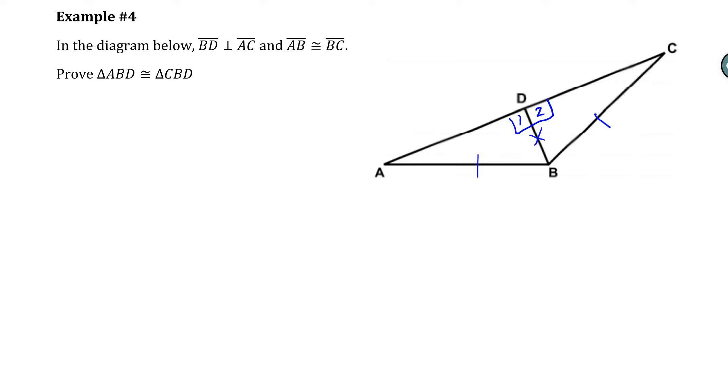So let's see what this proof actually winds up looking like. So the first thing that we have to do here is we have to say that BD is perpendicular to AC. That's given. And then we have to say that angle 1 and angle 2 are right. And the reason why is perpendicular lines form right angles.